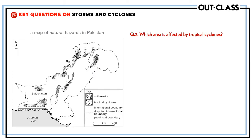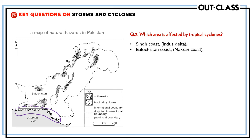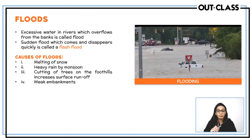The area affected by tropical cyclones can be seen on the map — it is the region along the borders near the Arabian Sea, specifically the Sindh coastal region and the Balochistan coastal region.